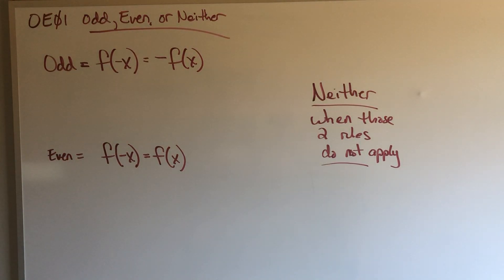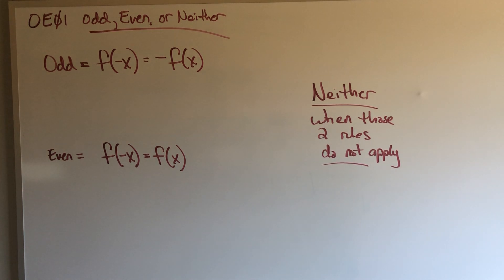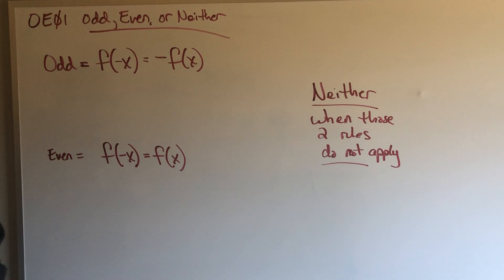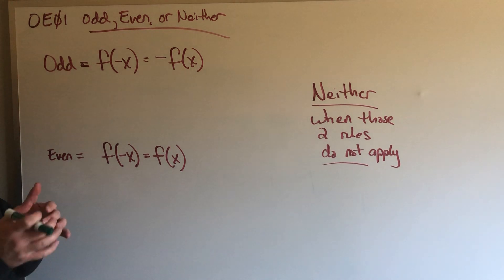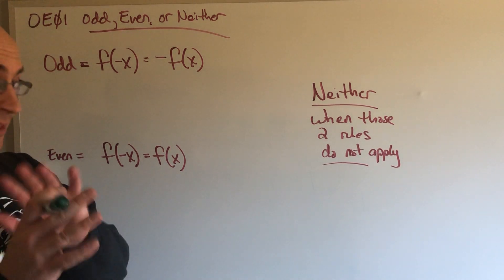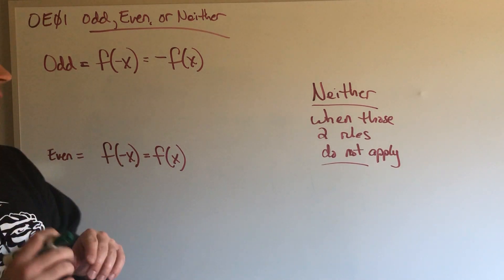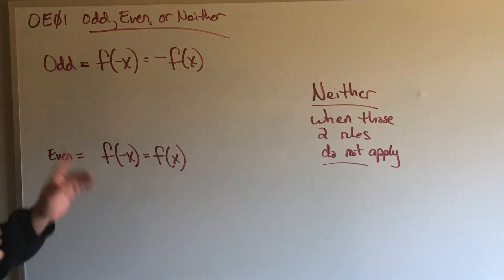Hey everyone. So this is a little bit weird, so let me try to explain. A function is classified as odd, like an odd function, even as an even function, or neither as neither odd nor even, if it follows these rules. Now I'm going to do a couple of examples, but let's try to understand a little bit what this means first.